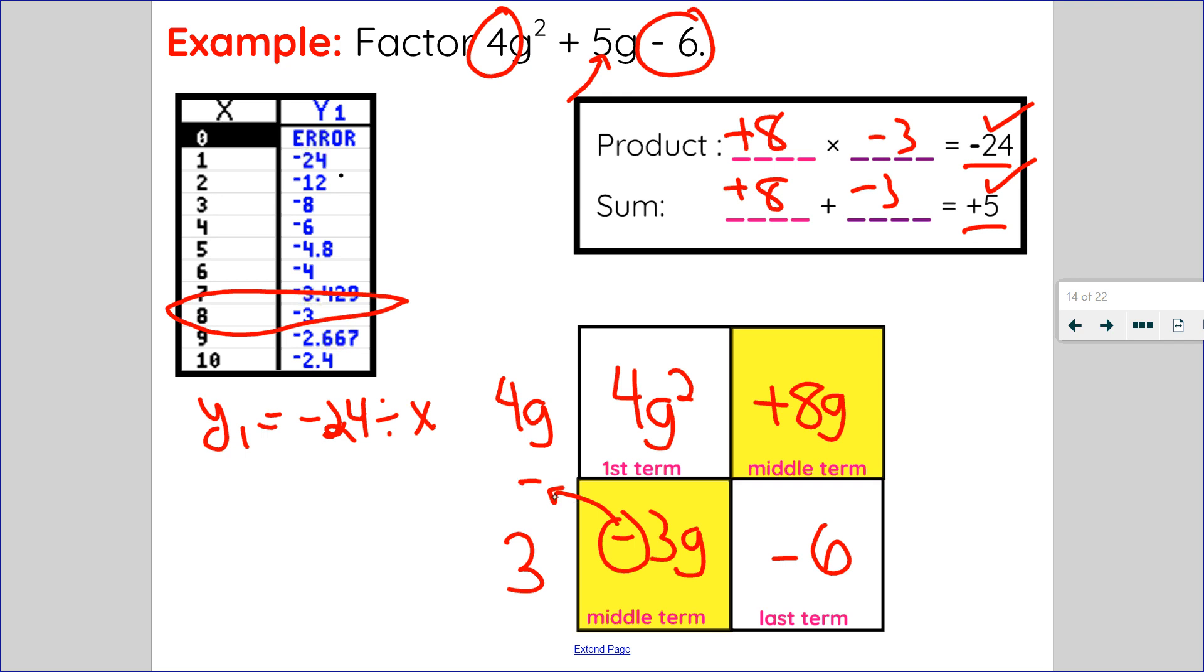In column number 1, 4g squared and -3g have a GCF of g. Since this is positive, I take out an addition.